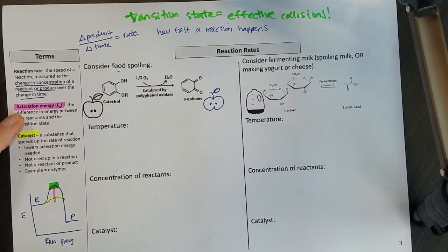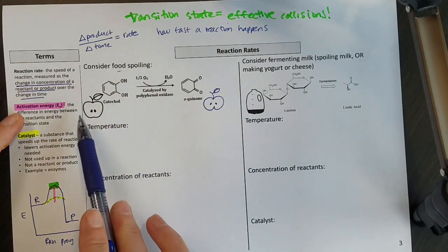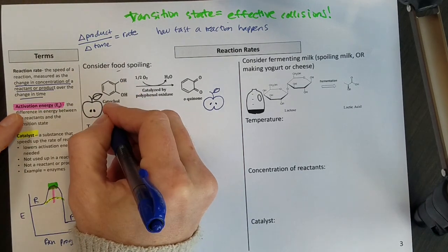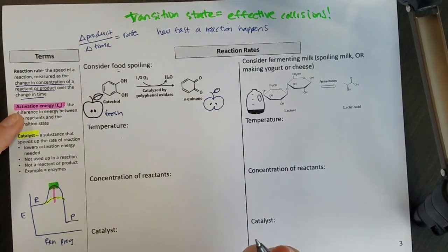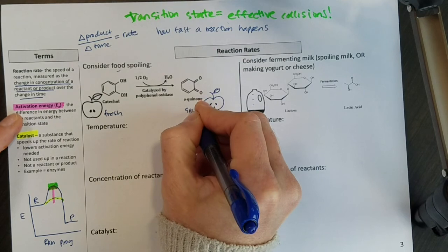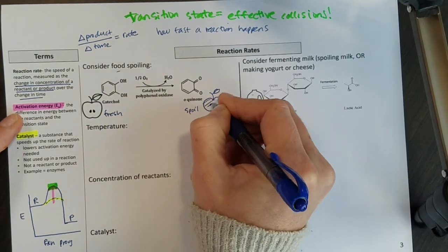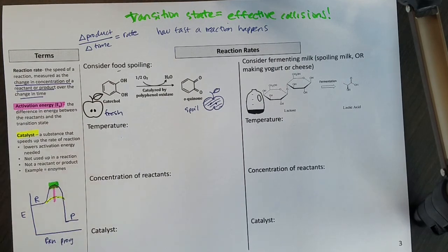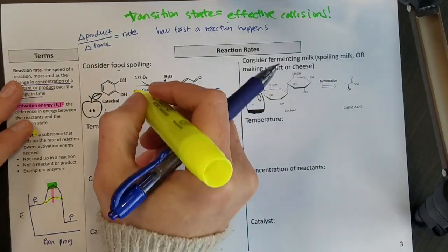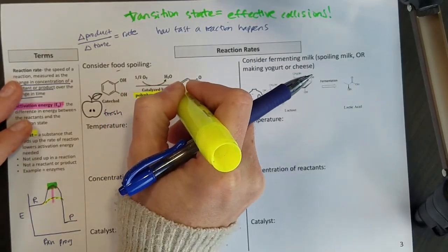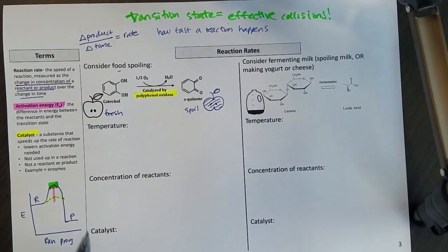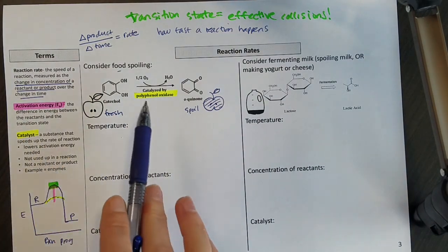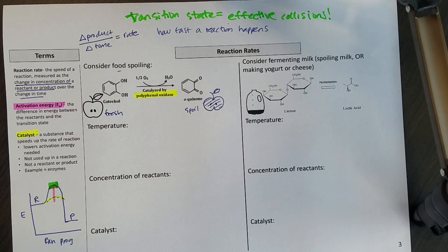We're going to think about food spoiling, because we all know that. If we have a fresh apple, it has no color, but then as my apple starts to get old and spoil, it starts to turn brown. This reaction happens faster when you have the enzyme polyphenol oxidase, so that's a catalyst helping the reaction go faster. Let's think about with food.